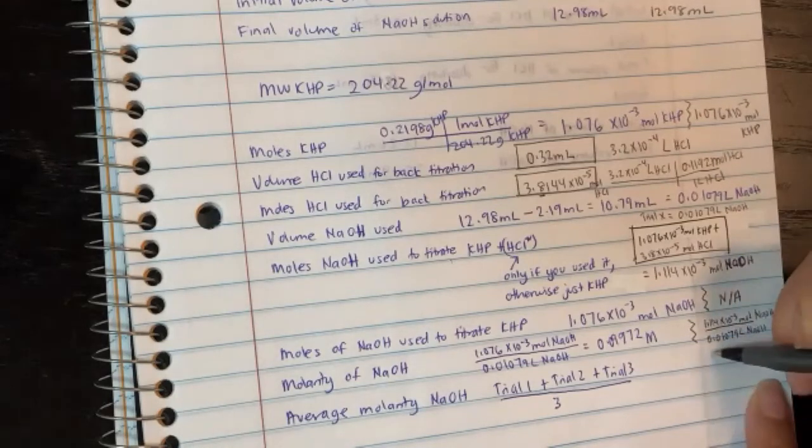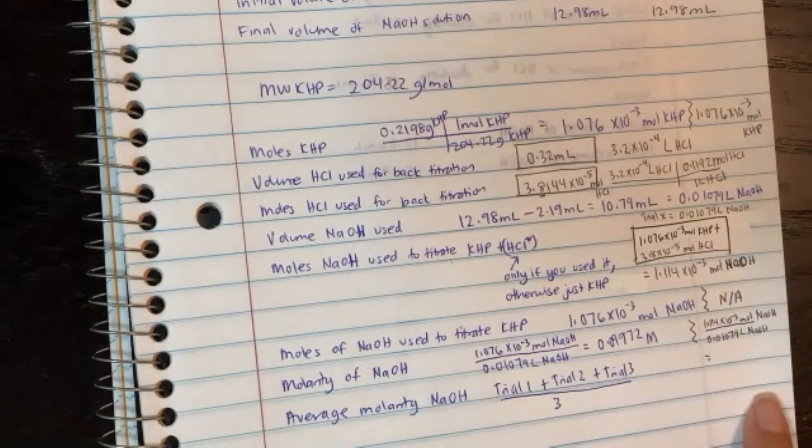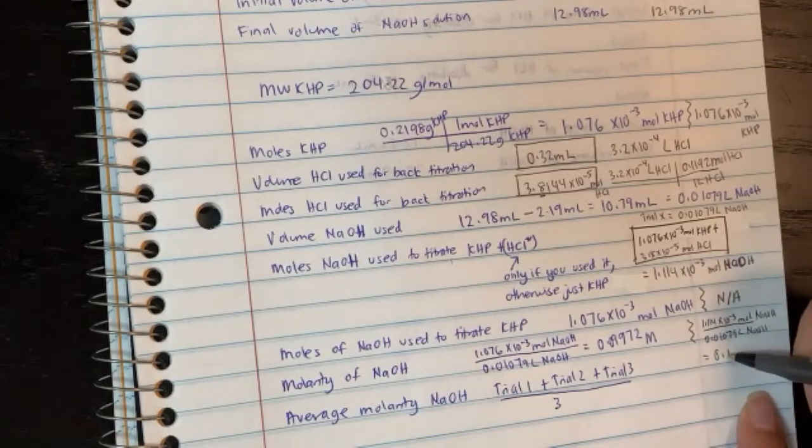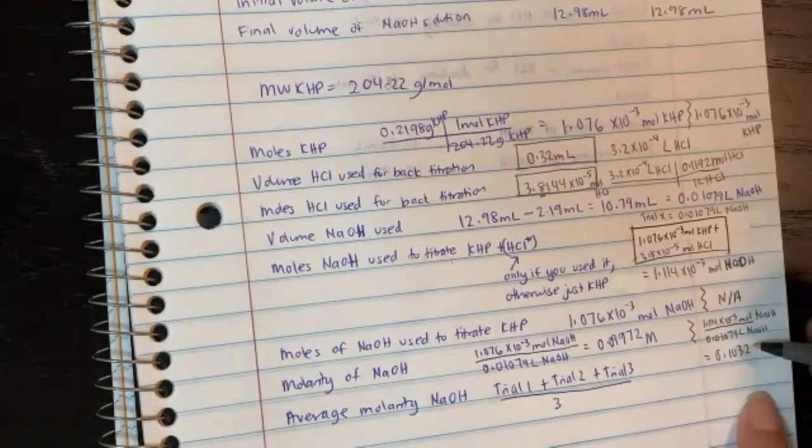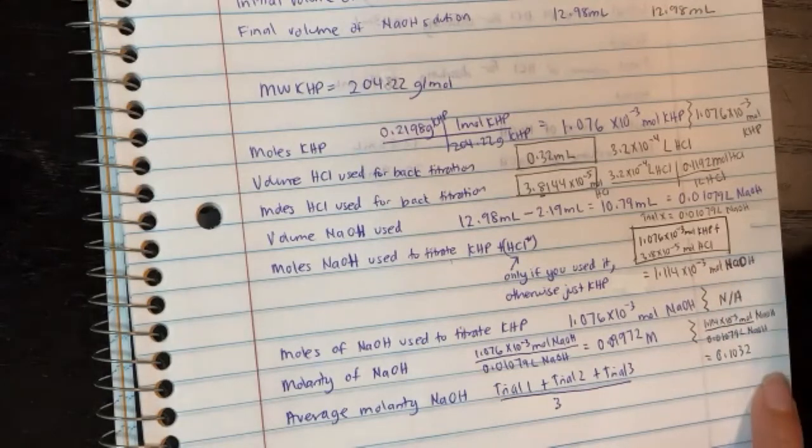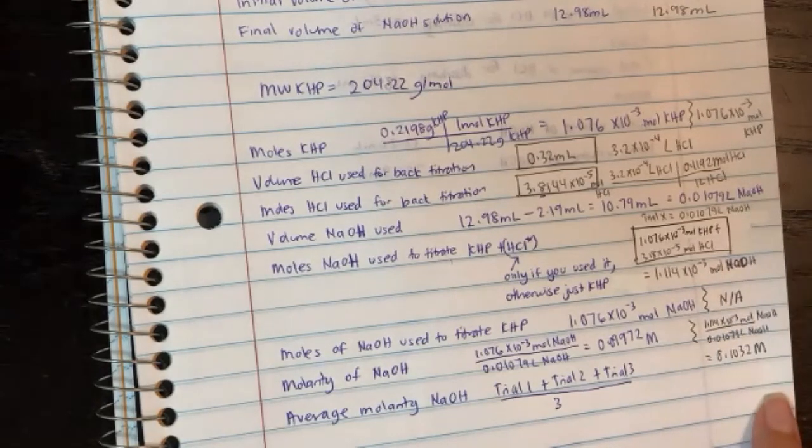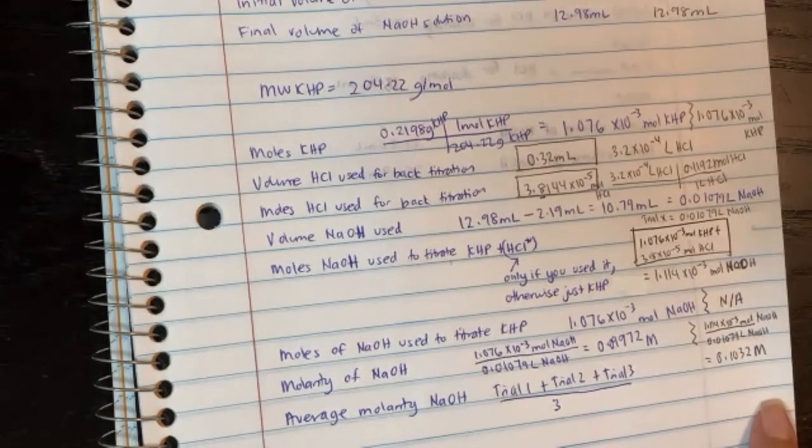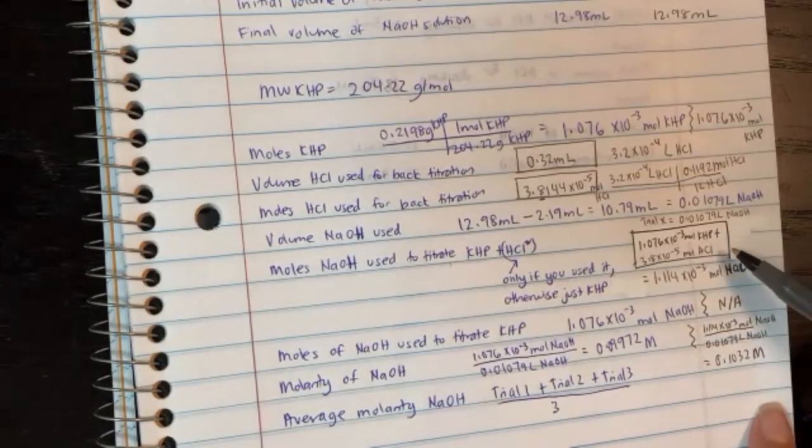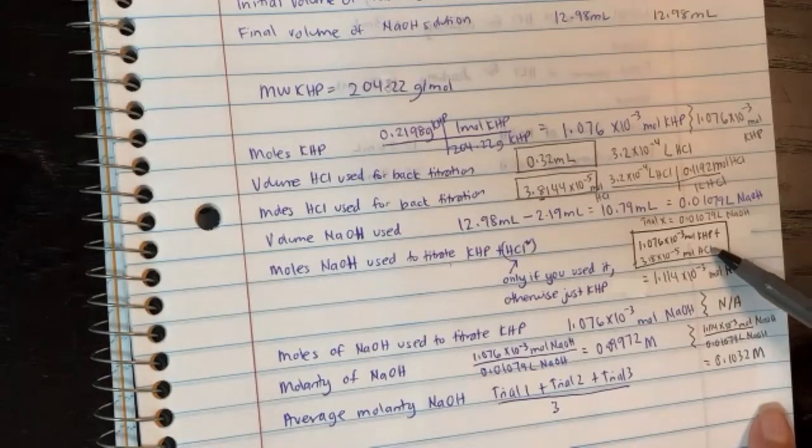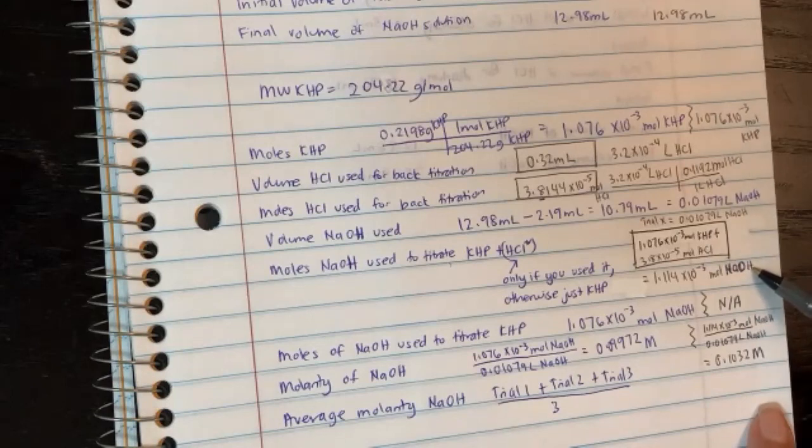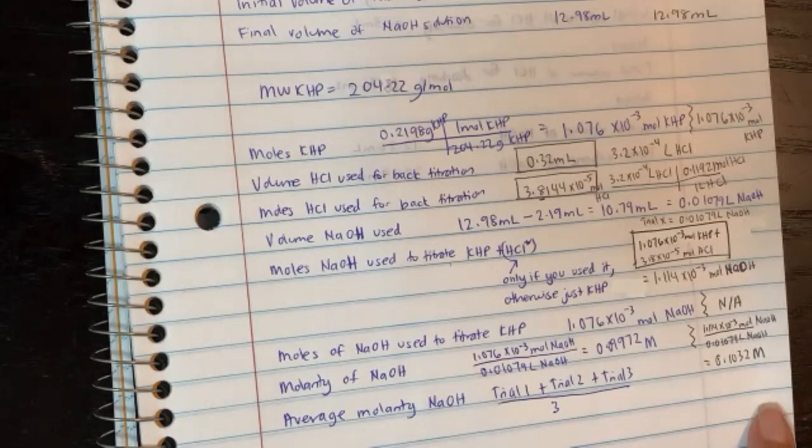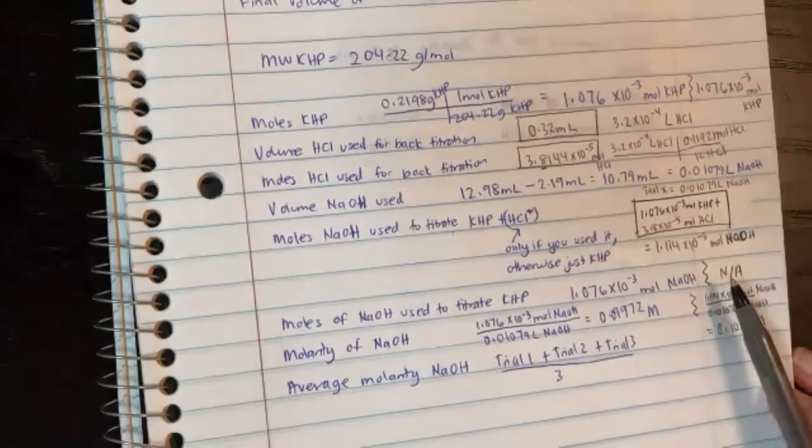So slightly different. I get 0.1032. So now you see the difference. Basically, if you had back titration, your moles is slightly different because you have two sources of acid here. So your moles of NaOH is slightly bigger, which would mean your molarity will be slightly bigger.